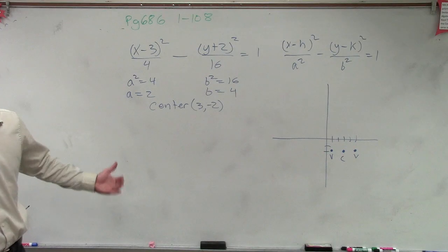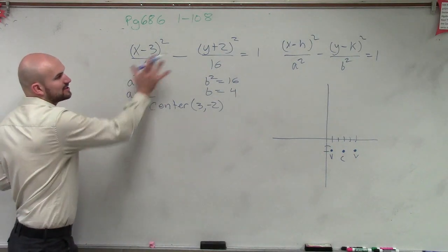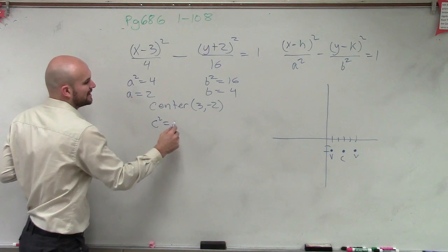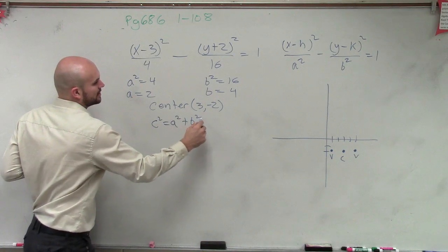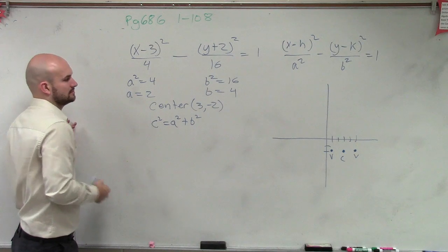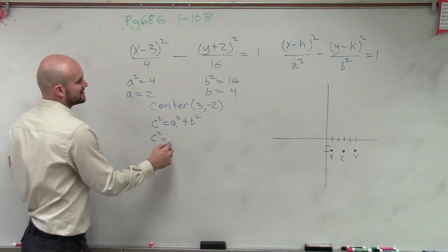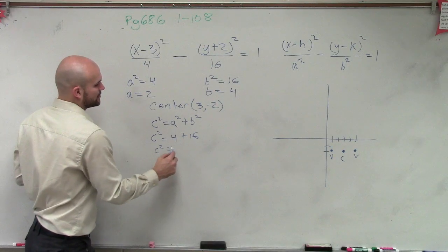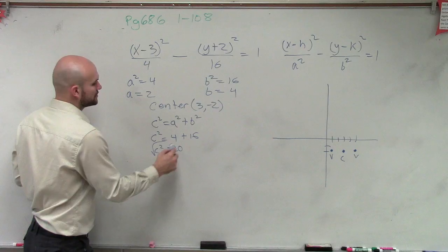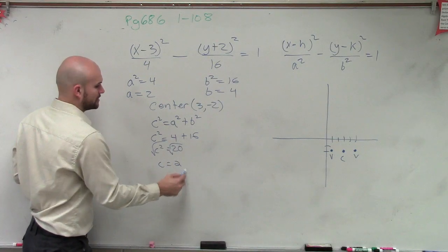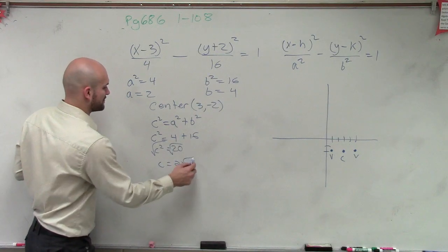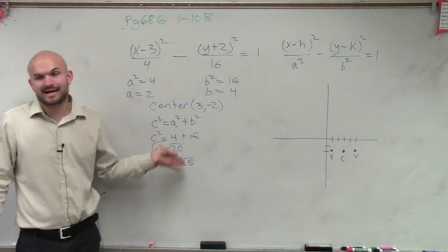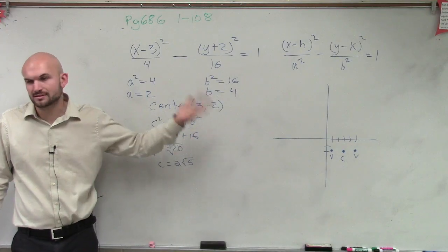Now what I need to do is determine my foci. Remember that the relationship between a, b, and c for a hyperbola is c² = a² + b². So therefore, my c² in this case is going to be 4 plus 16. So c² equals 20. Taking the square root, c equals 2√5. You guys can simplify that — it's going to be like 4-point-something as a distance.